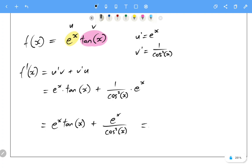If we wanted to, we could alternatively factorize out the e to the x, and we'd be left with tan of x plus 1 on cos squared of x.